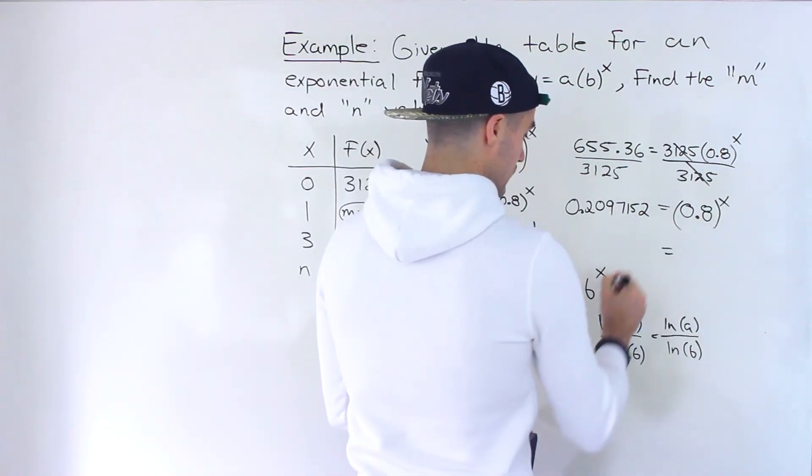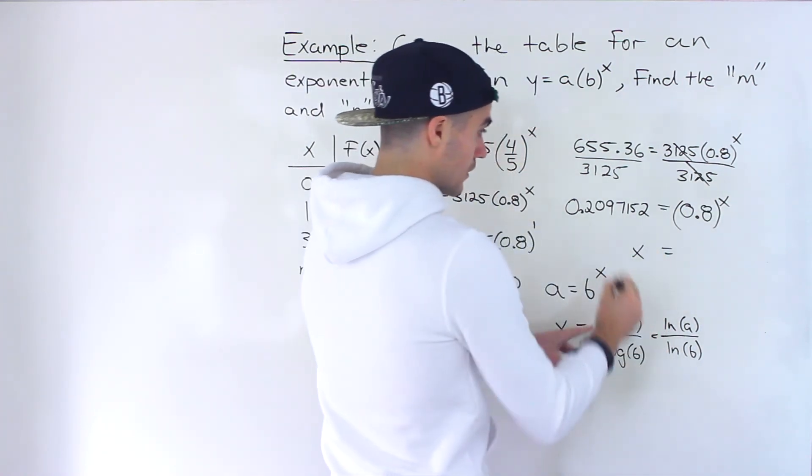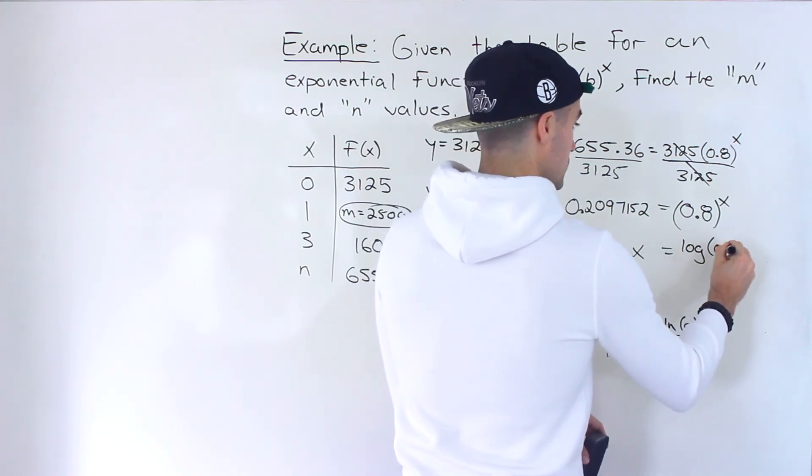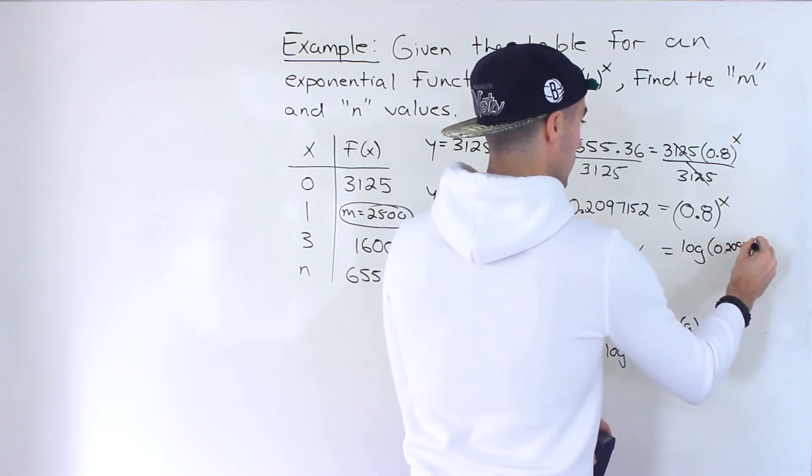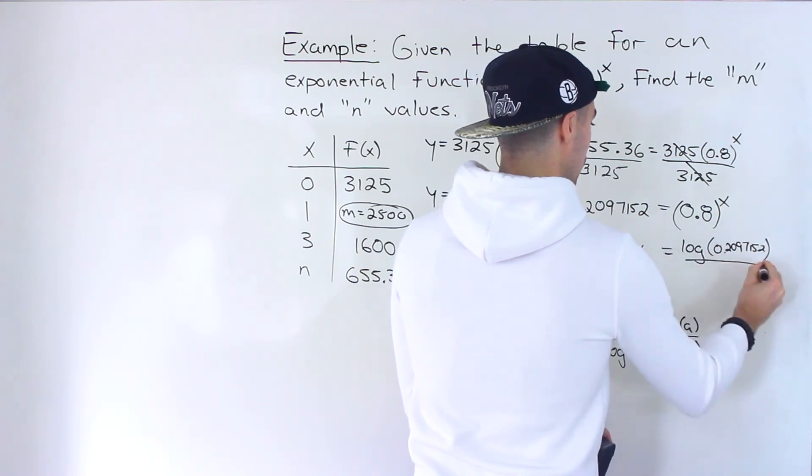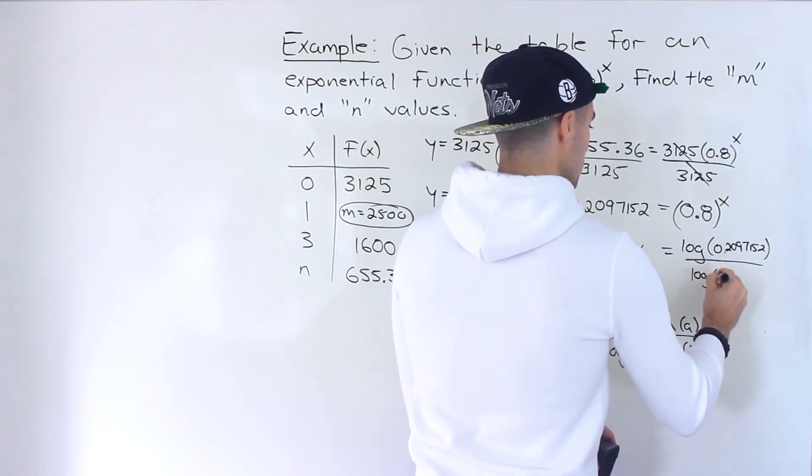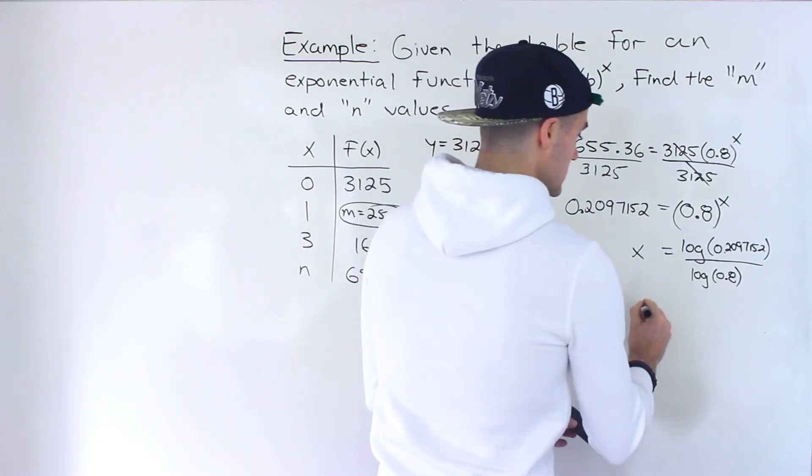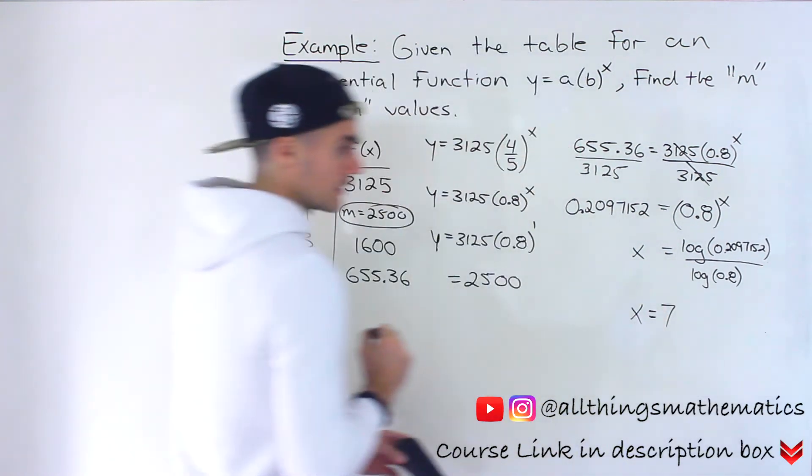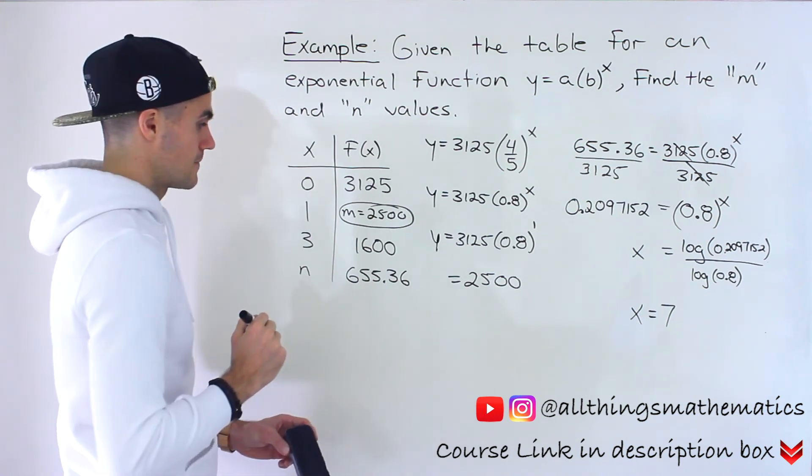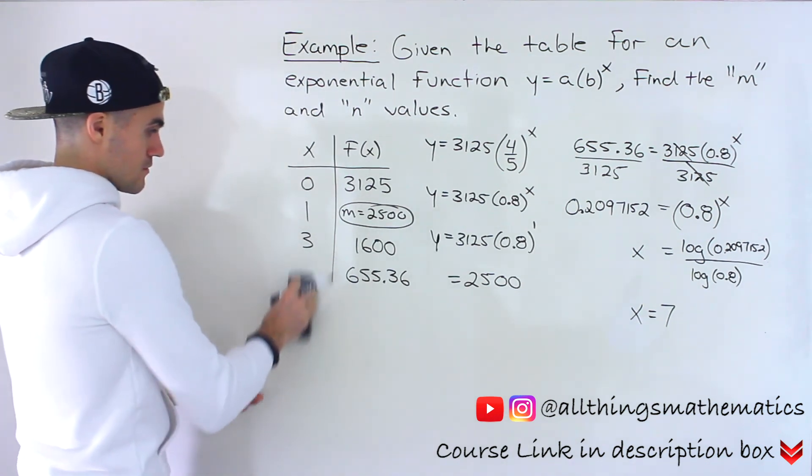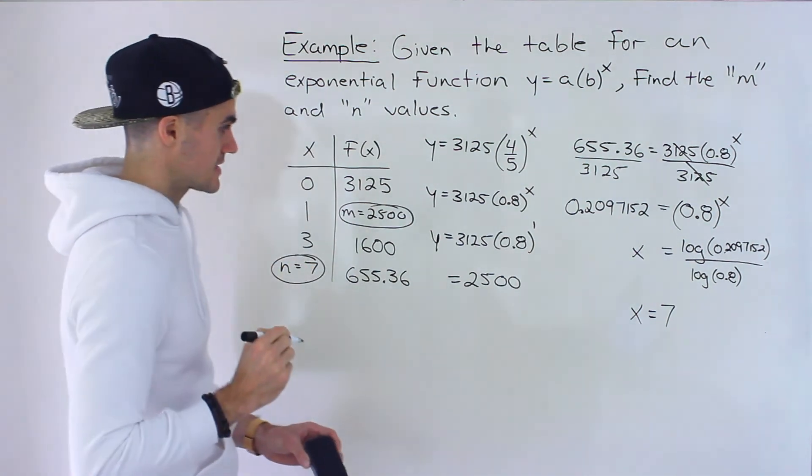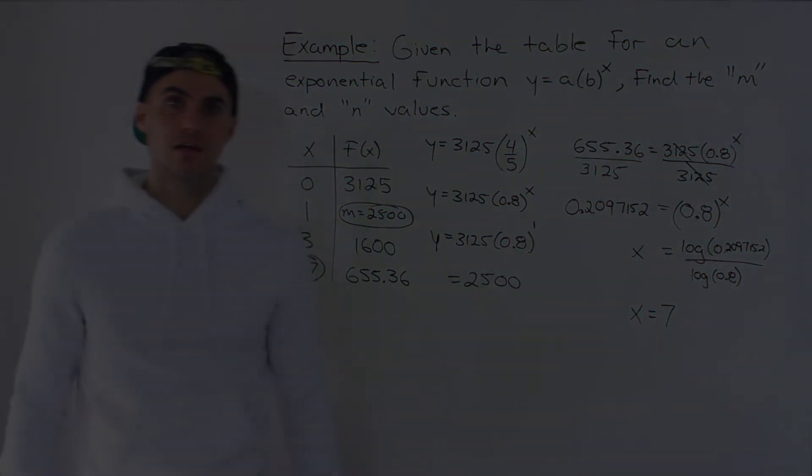So if we want to isolate for the x, we would take log of this, 0.2097152 over log of 0.8. What do we get? We end up with x equaling 7, like that. So the n value ends up being 7, and we're done the question.